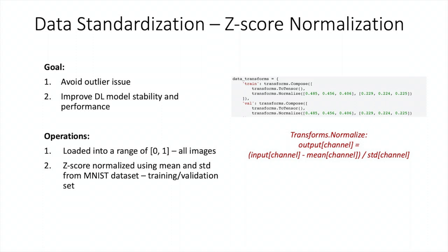After the images are all set, we apply z-score normalization on training data and validation data. The goal is to avoid outlier issues and improve the stability and performance of deep learning models. The way we do it is first load all the pixel data into a range of 0 to 1. Then we do the z-score normalization using the mean and standard deviation derived from MNIST dataset.